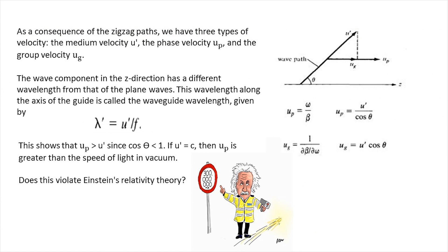As a consequence of zigzag paths, we have three types of velocity: the medium velocity, the phase velocity, and the group velocity. The medium velocity is given as one upon root mu epsilon. The phase velocity is the velocity at which loci of constant phase are propagated down the guide. The group velocity is the velocity with which the resultant repeated reflected waves are traveling down the guide. Phase velocity is given as omega upon beta, whereas group velocity is given as dω upon dβ.